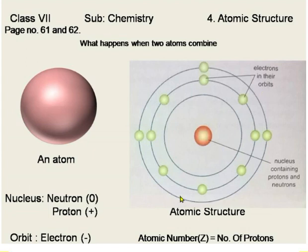Let us know the charge of these subatomic particles. Neutron has no charge — it is neutral, so zero charge. Proton has a positive charge and electron has a negative charge.